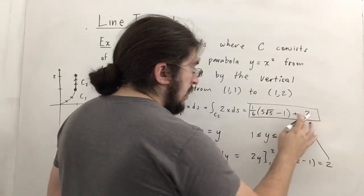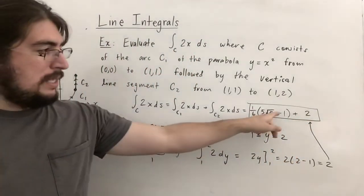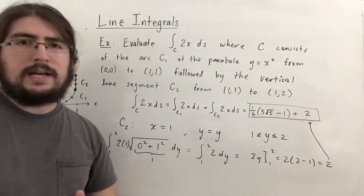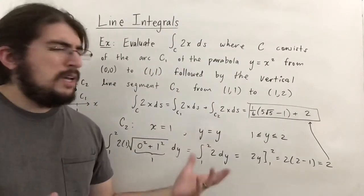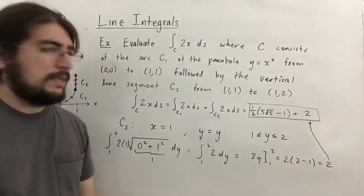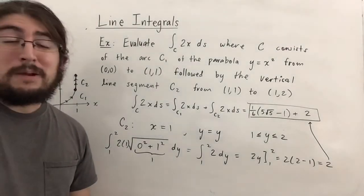So the total answer for this example is the answer from c1, which is one-sixth times the quantity 5 root 5 minus 1, plus 2 from c2. You could combine these into a single fraction, but we'll leave it in this form.